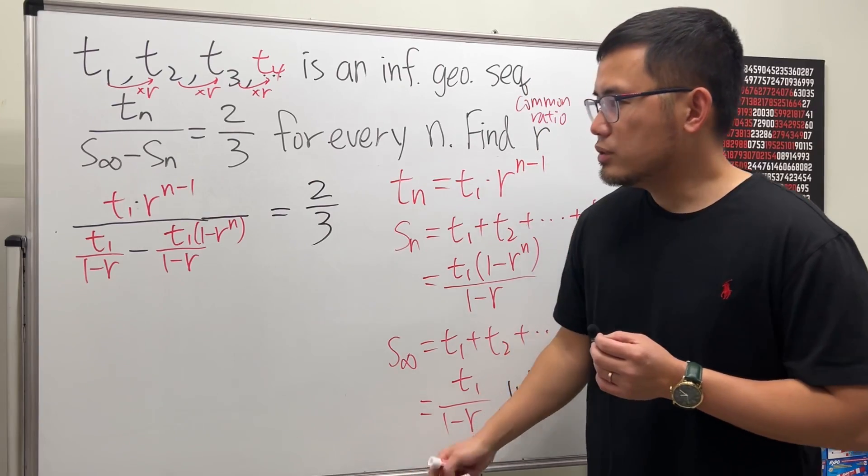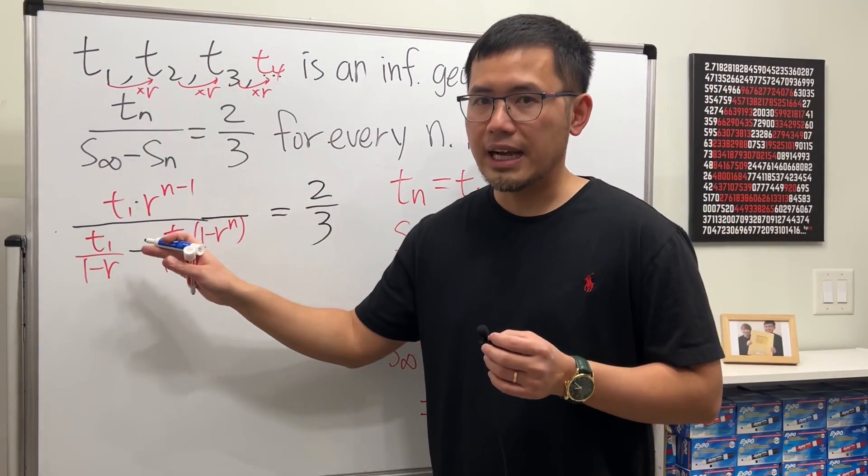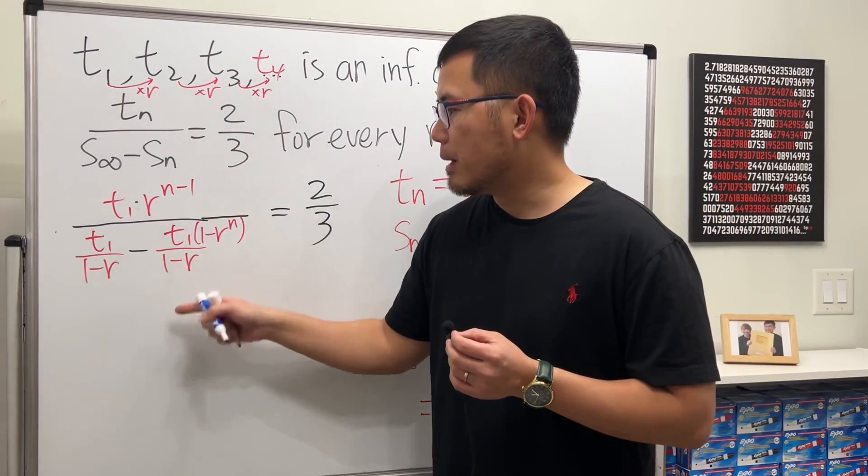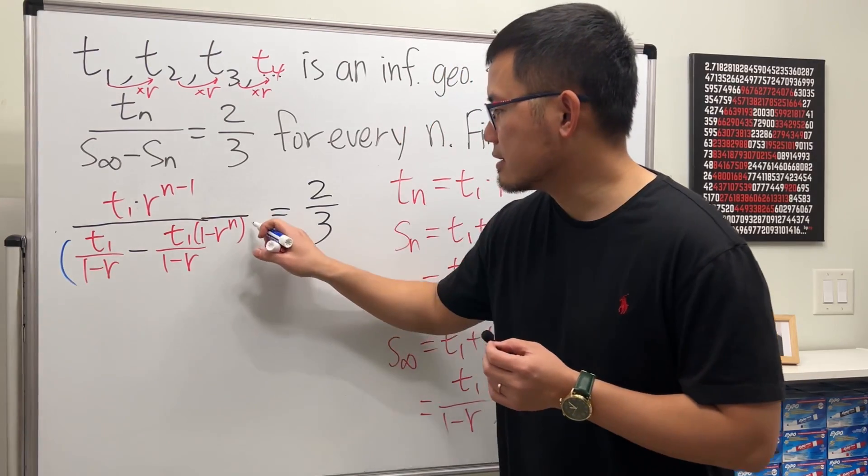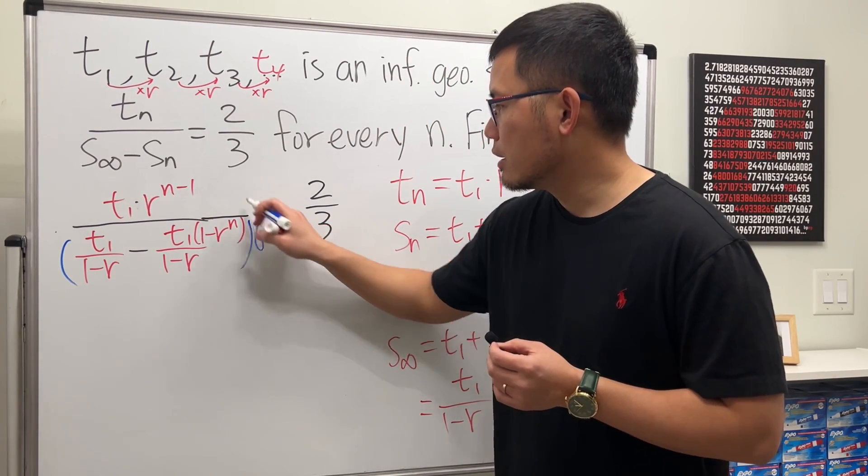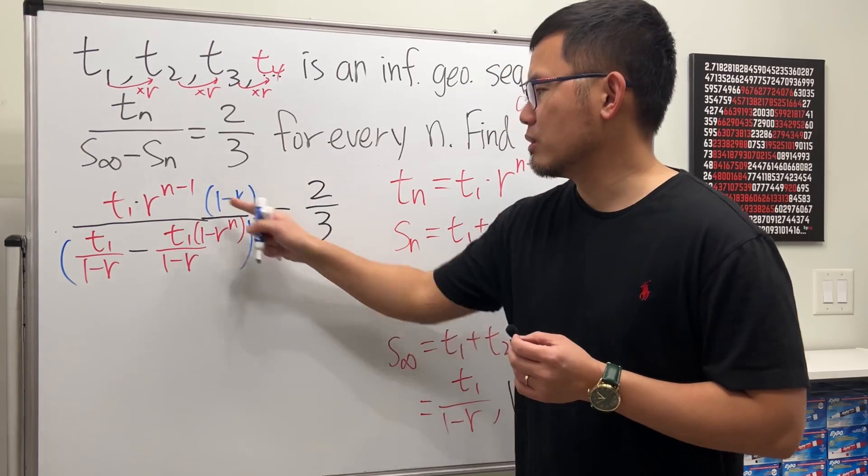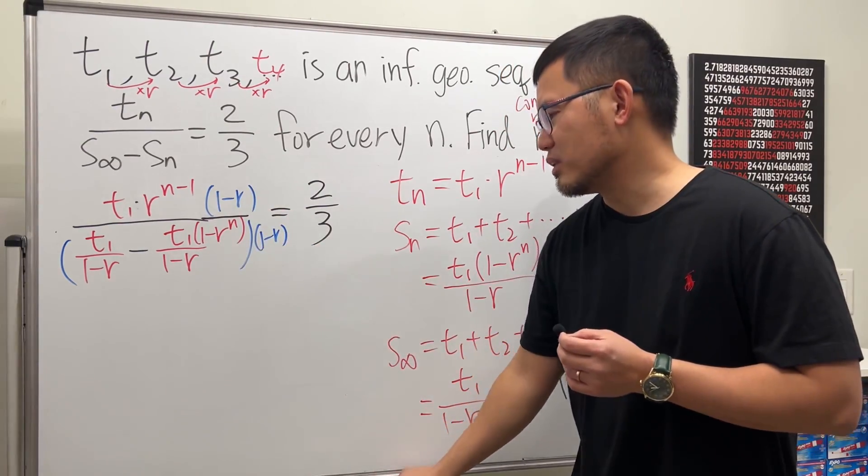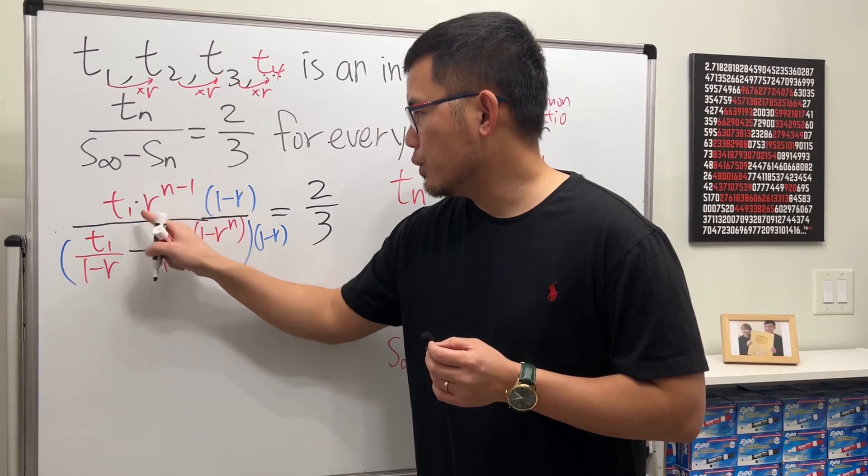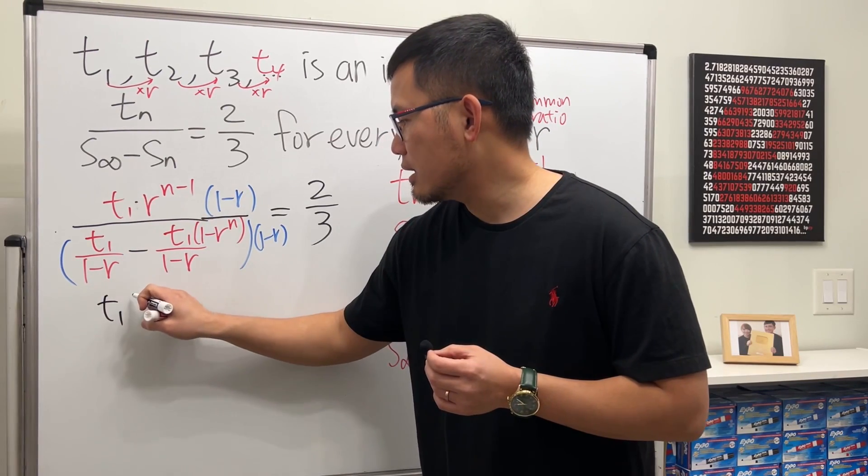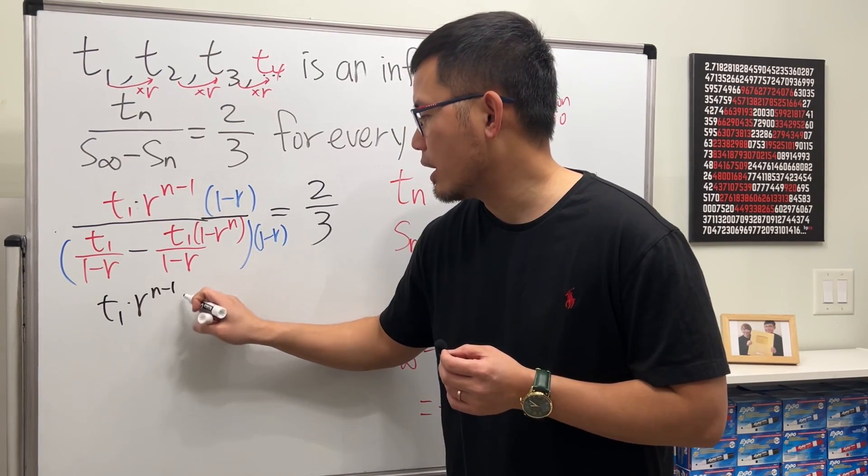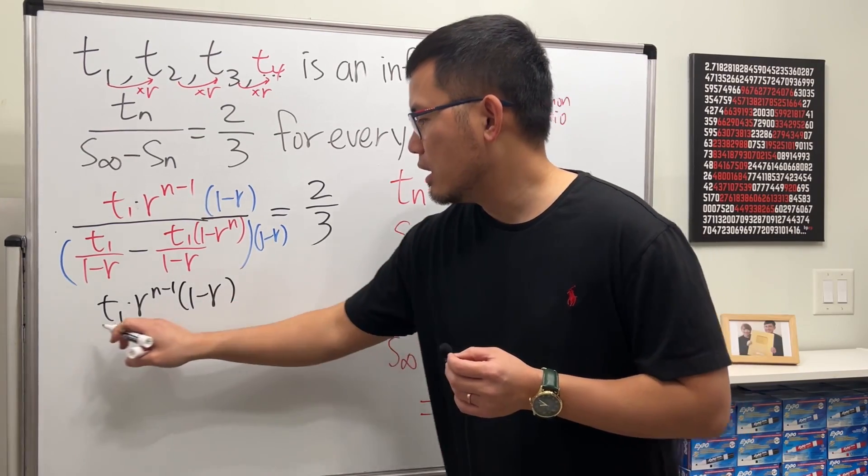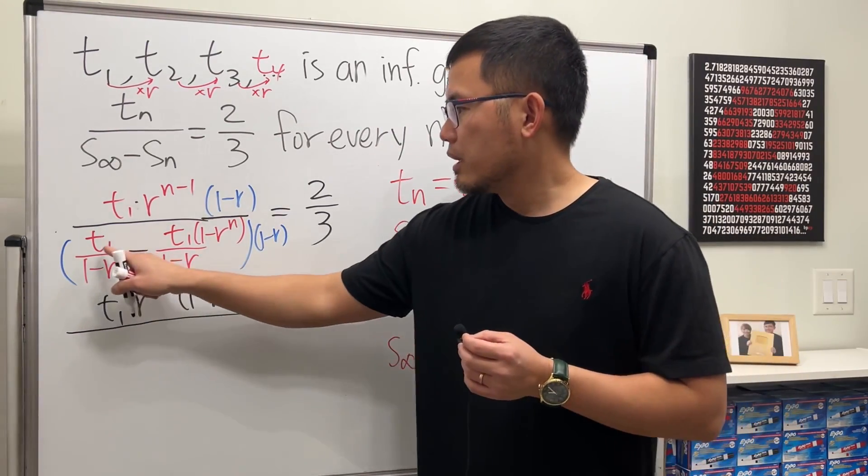And to do so, let's just work on the left-hand side. Simplify it. Top and bottom, let me just multiply by 1 minus r. Or if you would like, you can also cross multiply. I think this right here might be easier, though. So right here, let's see.